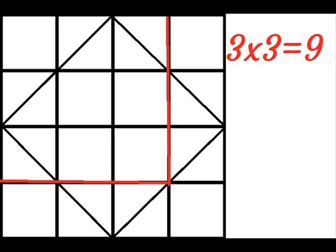The next square grid has 3 into 3 squares. So totally there are 9 squares.